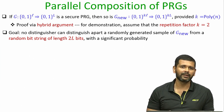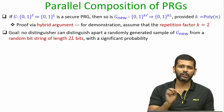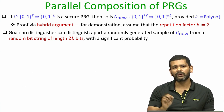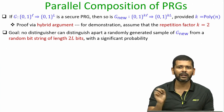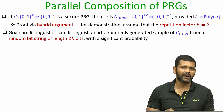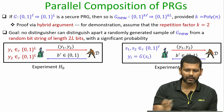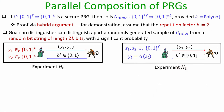Our goal is to show there exists no polynomial time distinguisher who can distinguish a uniformly random sample generated by G_new from a uniformly random string of length 2L bits. We consider two experiments H0 and H1; in both, the distinguisher is given a sample consisting of two blocks of big L bits, denoted Y1 and Y2, and must determine how the sample was generated.